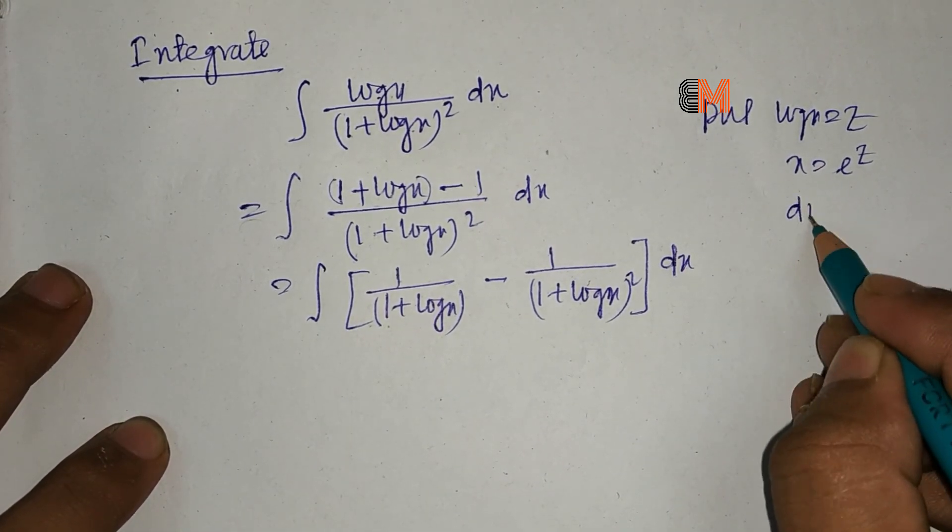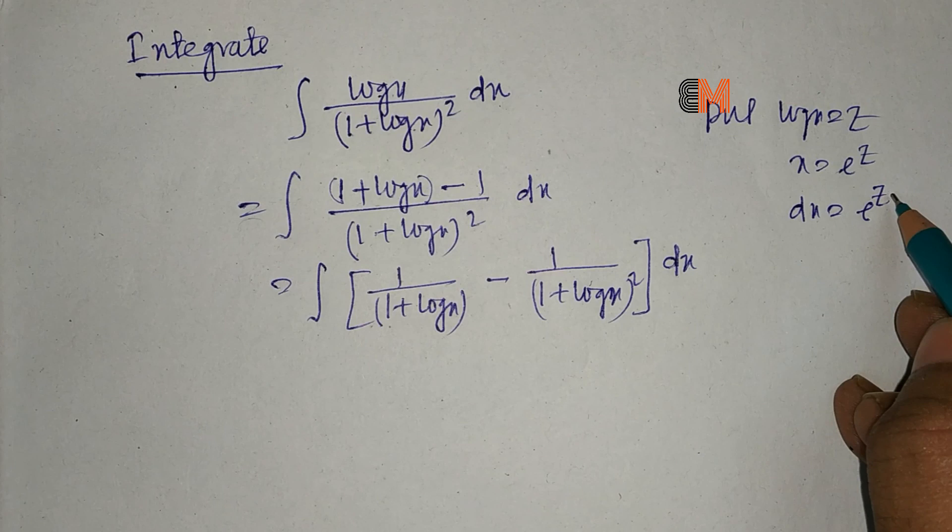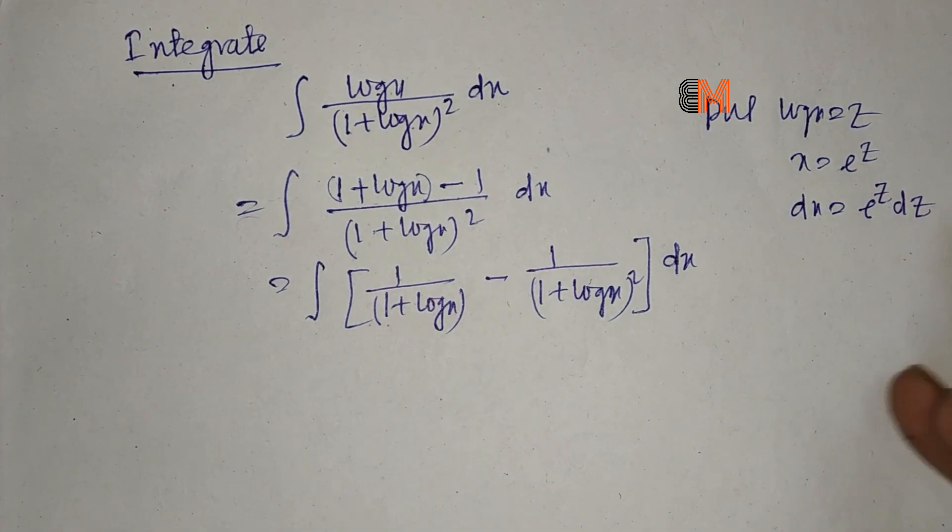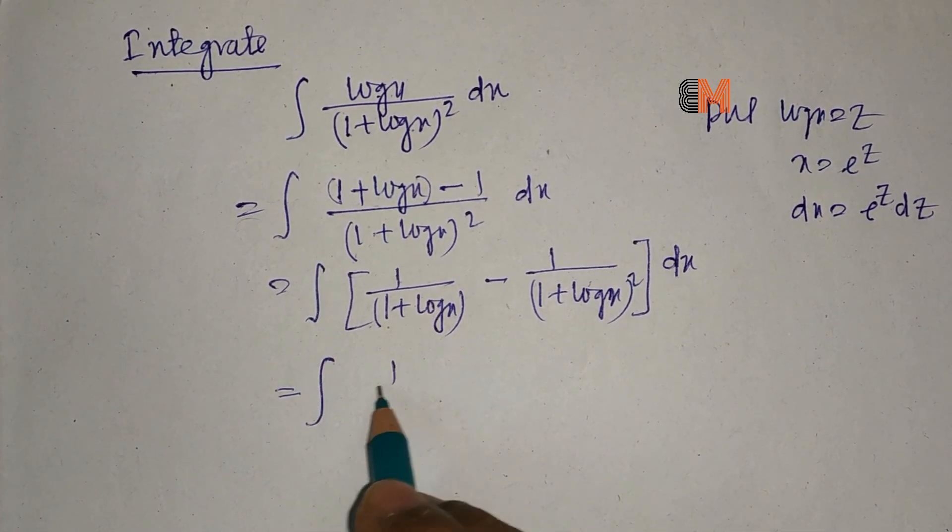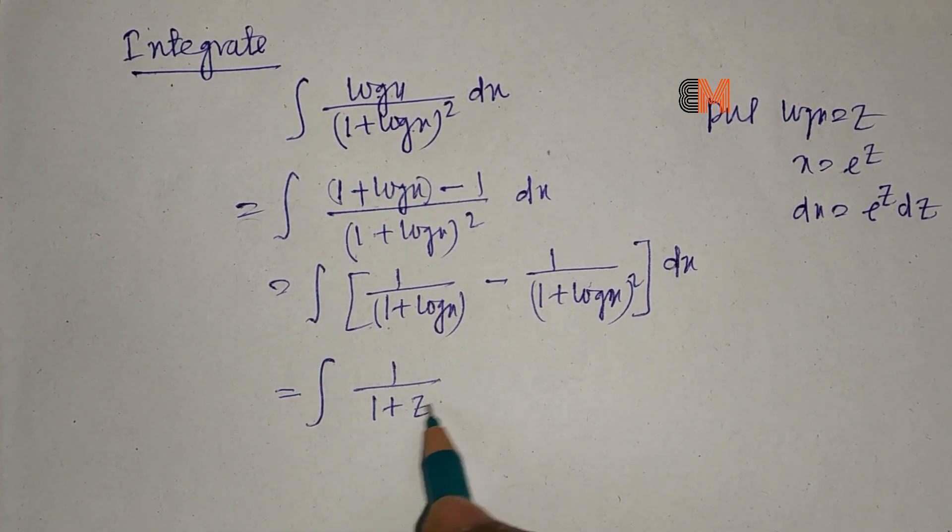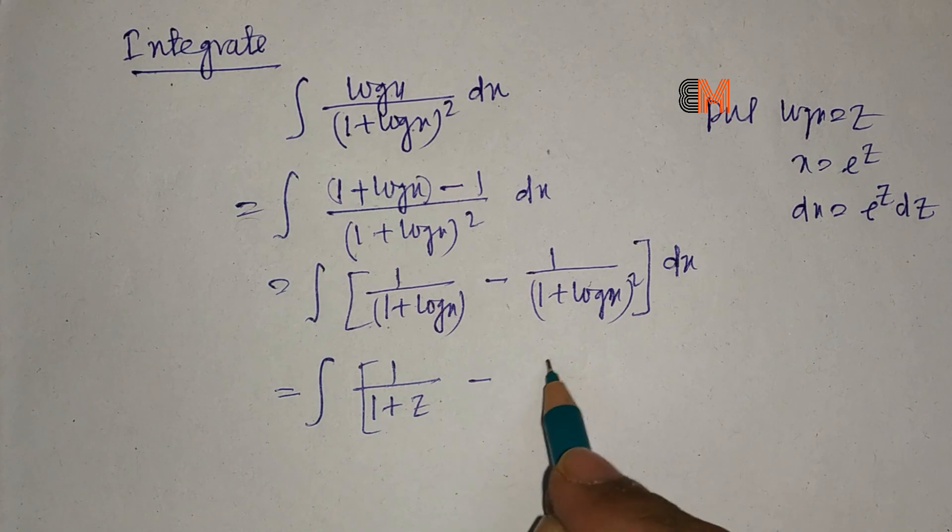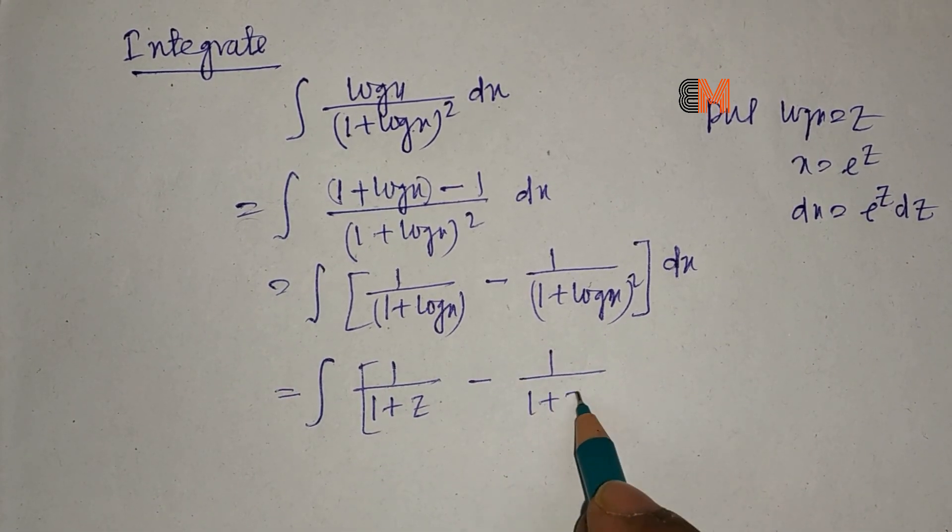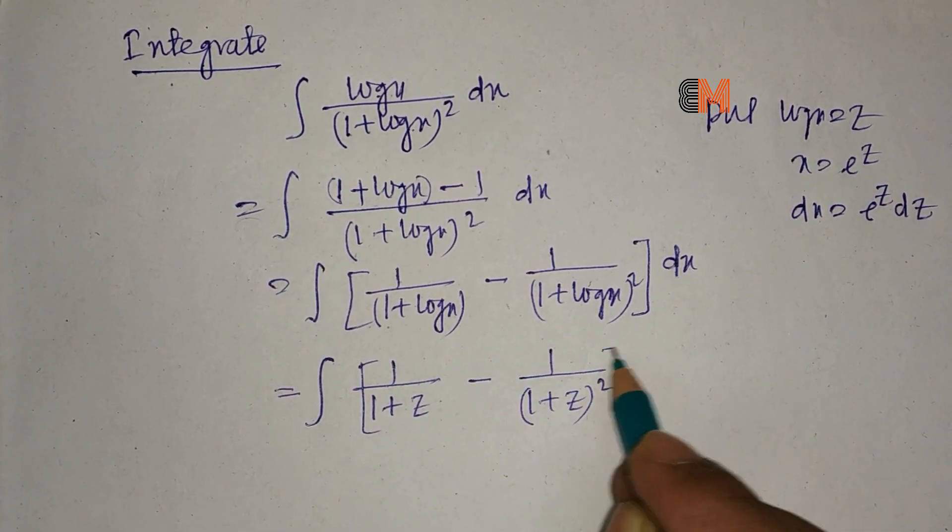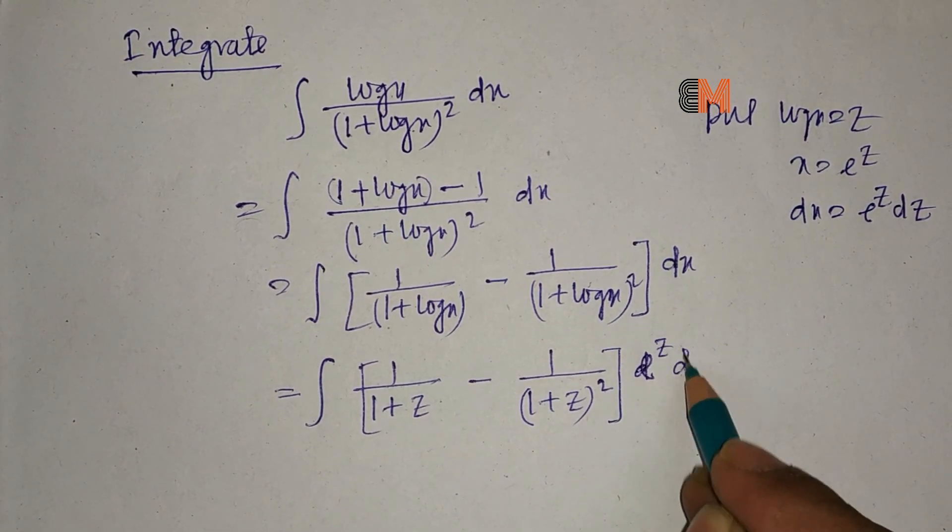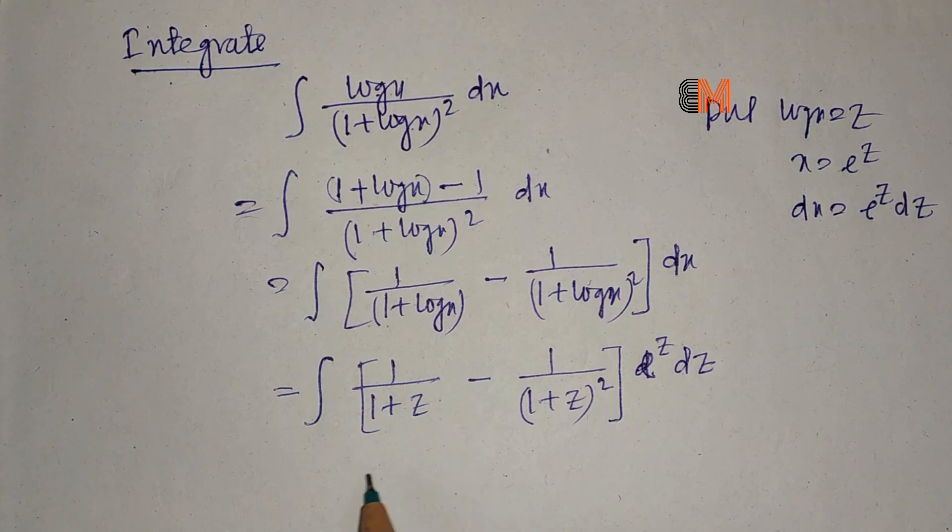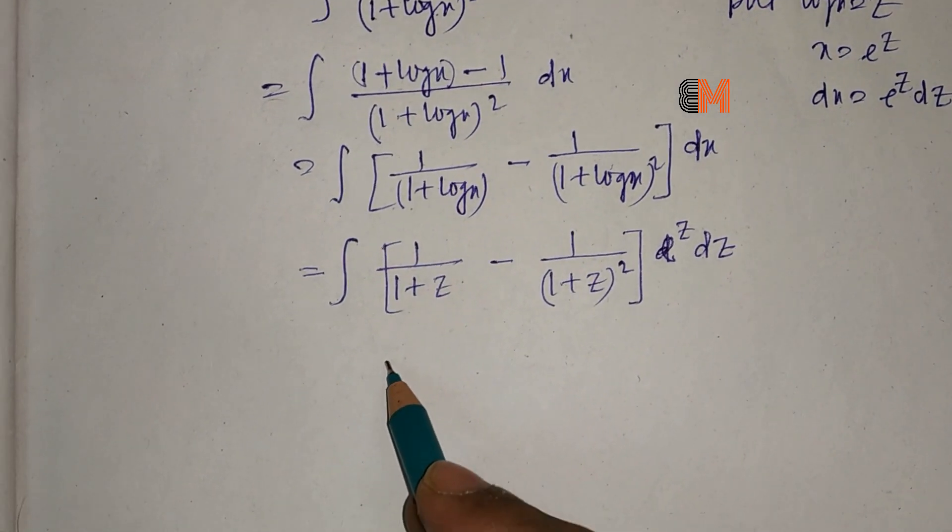That means dx equals e to the power z dz, and the integral transforms into [1 divided by (1 + z) minus 1 divided by (1 + z) squared] times e to the power z dz.